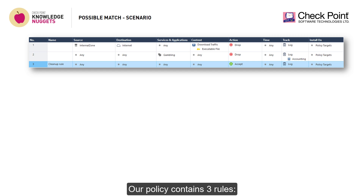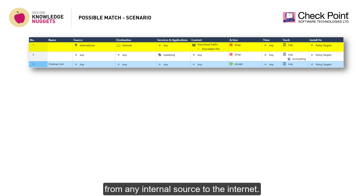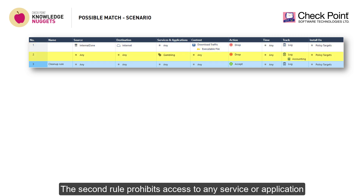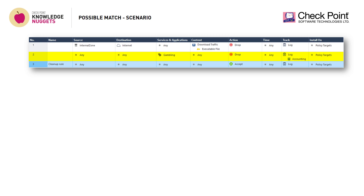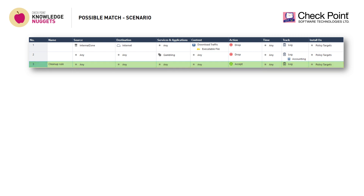Our policy contains three rules. The first rule prohibits the download of executable files from any internal source to the internet. The second rule prohibits access to any service or application that is classified as gambling. The third rule permits any possible type of connection.